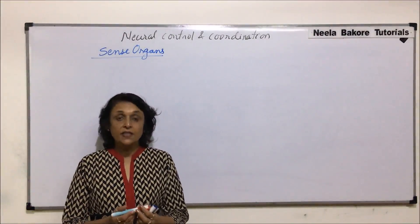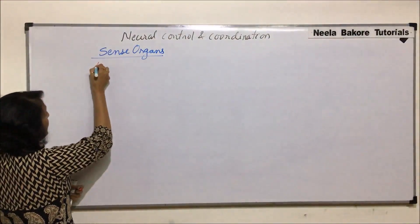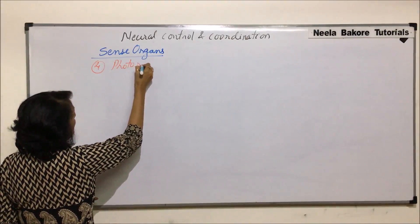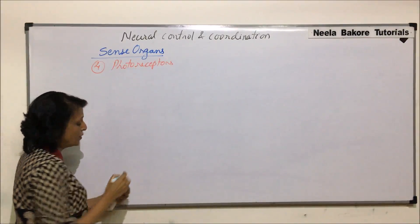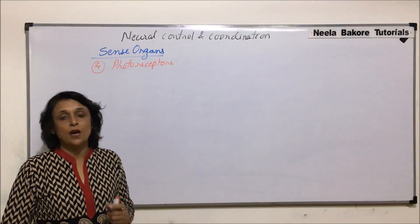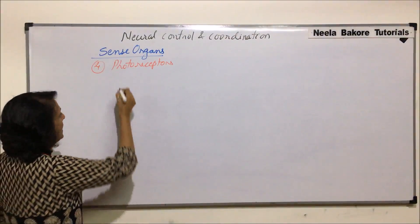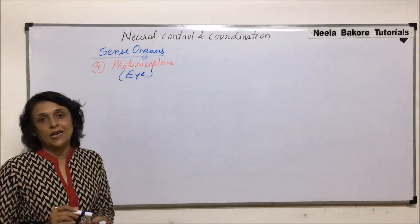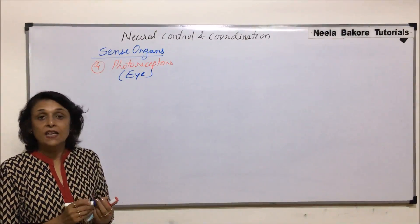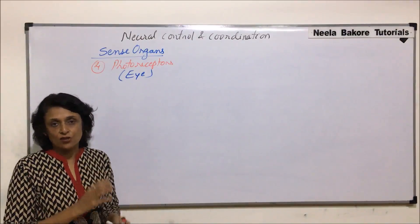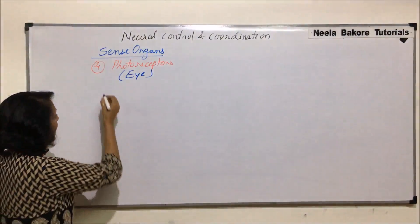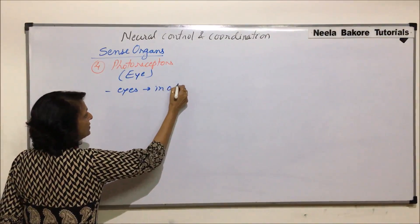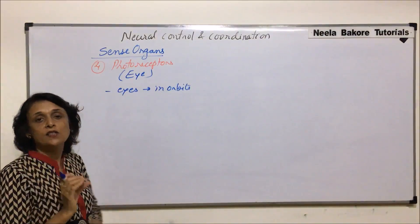The next sense organ we are taking up, the fourth one, are photoreceptors. Photoreceptors are the ones which are for vision, and the organ is the eye. Let us first talk about the location, size, and shape of the eye, and then see certain structures which protect the eye, and then the structure of the eye. These eyes are located in orbits — orbits are sockets in the skull where the eyes are placed.